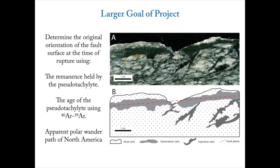The goal of this project is to look at pseudotachylites that form on what are called low angle normal faults — faults existing at relatively low angles as we sample them today. One of the big debates in the structural geology and tectonics community is whether these low angle normal faults formed in their current orientation, or if they formed at a steeper angle and then rotated to a shallower one. My hope is that we can use the remanence recorded by these pseudotachylites combined with age information and the apparent polar wander path from North America to figure out if they ruptured in place, or ruptured at a different angle and were then rotated.